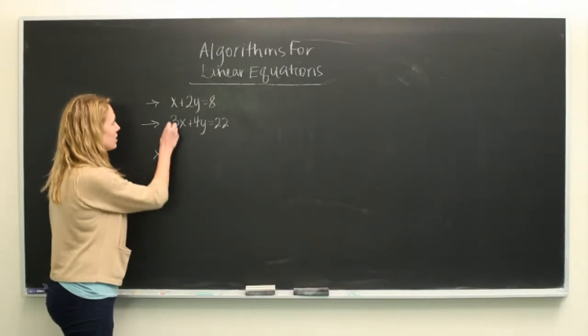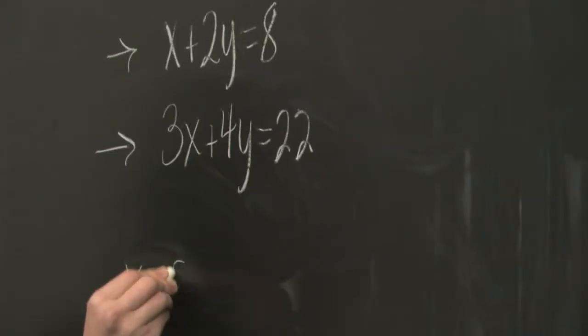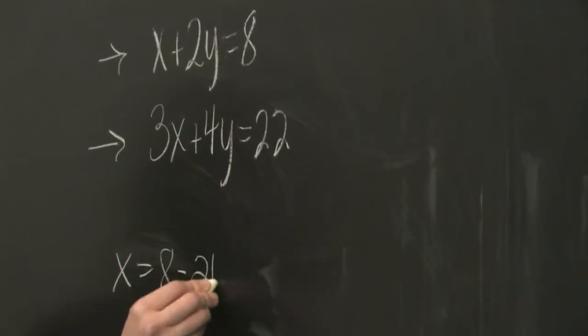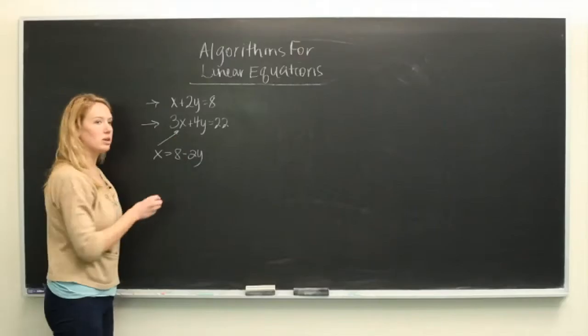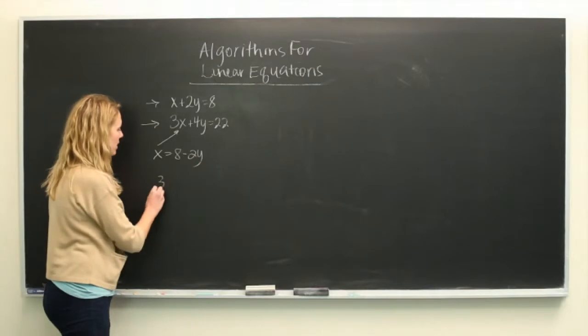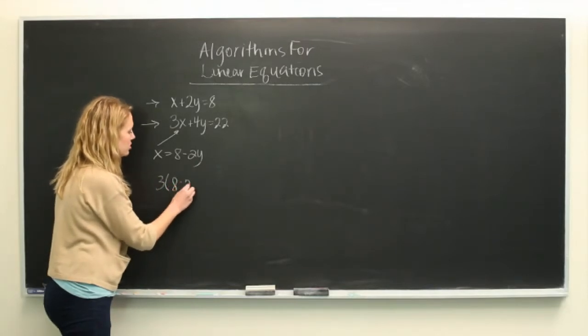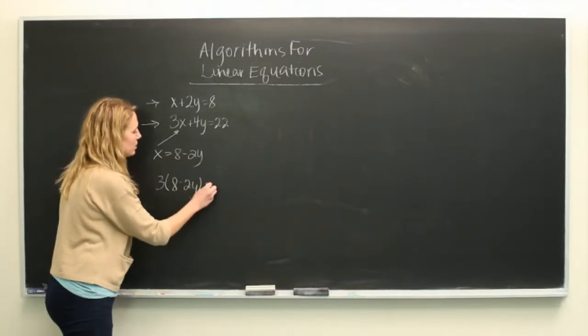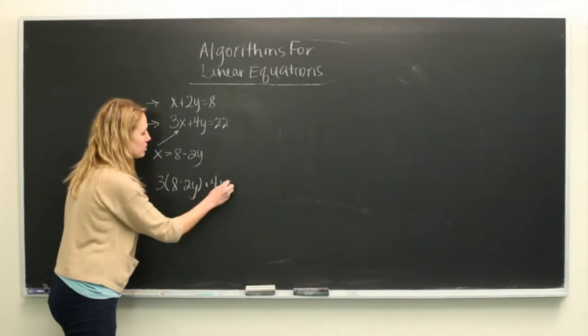X here in the first equation can be written as 8 minus 2y. When we plug this x back into our second equation, we have 3 times (8 minus 2y) plus 4y is equal to 22.